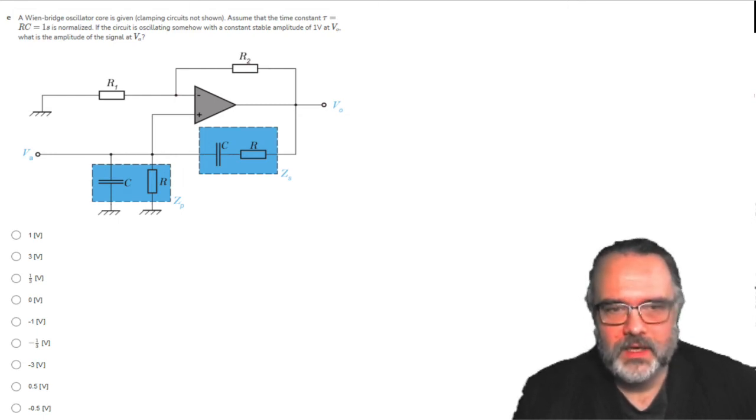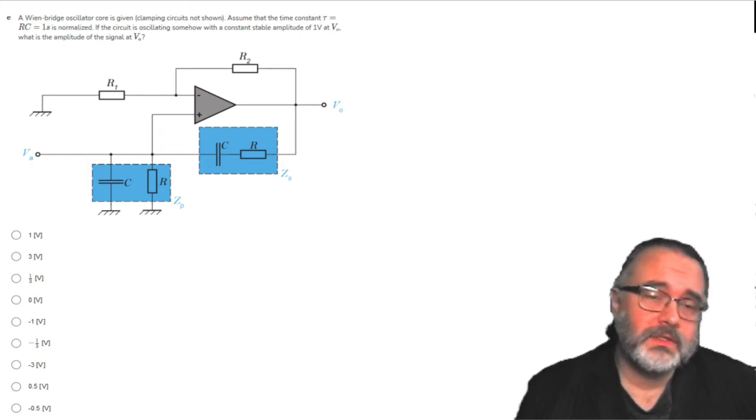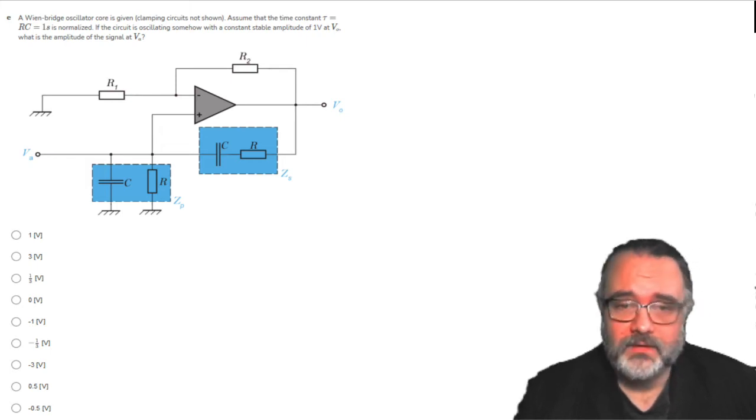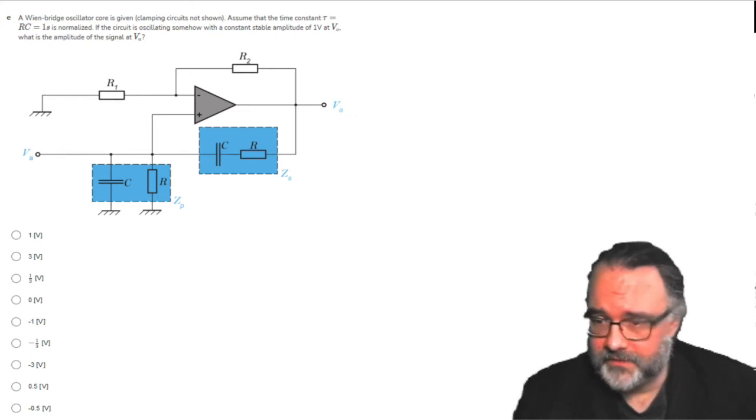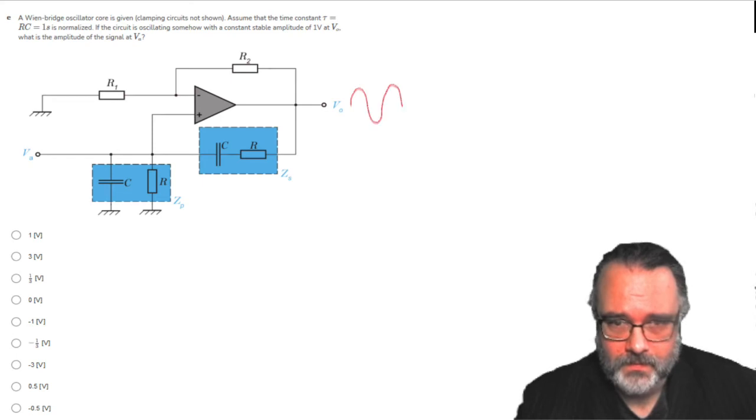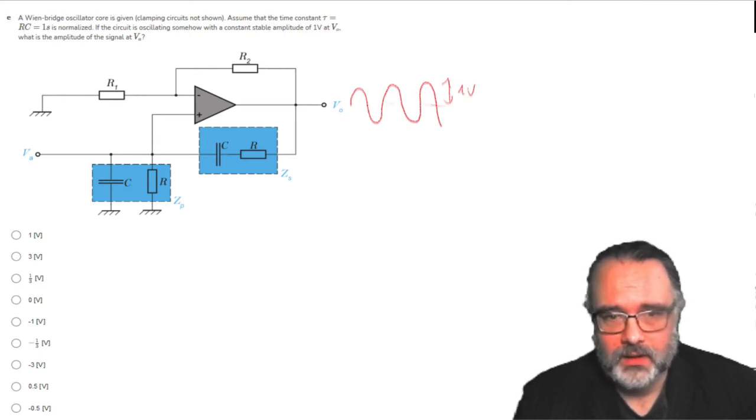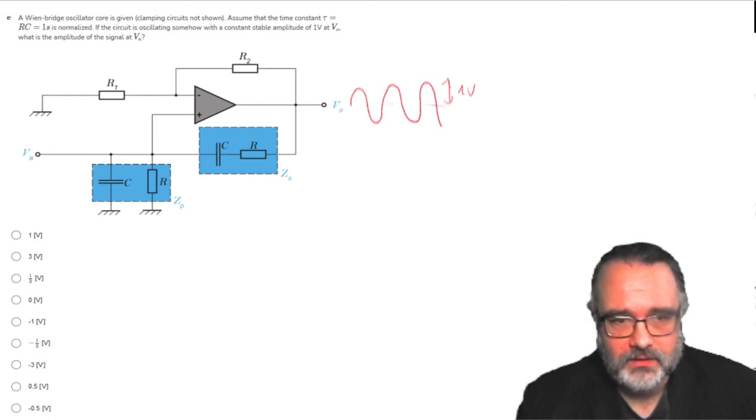If the circuit is oscillating somehow with a constant stable amplitude of 1 volt at Vout, so we have constant oscillations here, and the amplitude is 1 volt. And this is Vout. What is the amplitude of the signal at Va? So what is this amplitude?